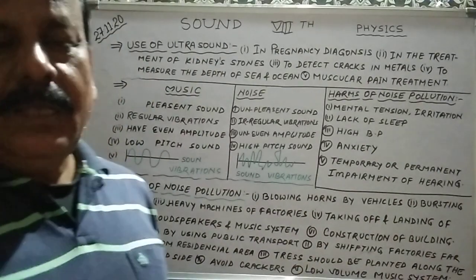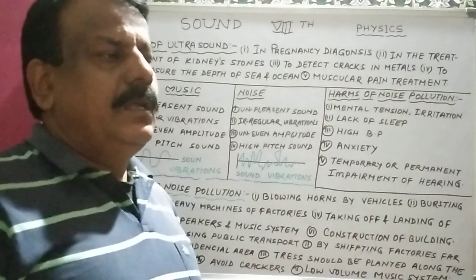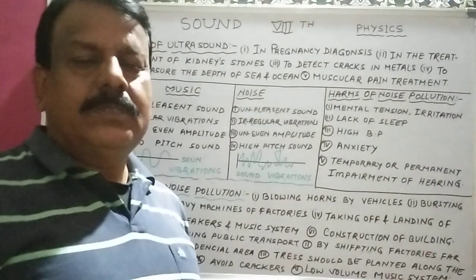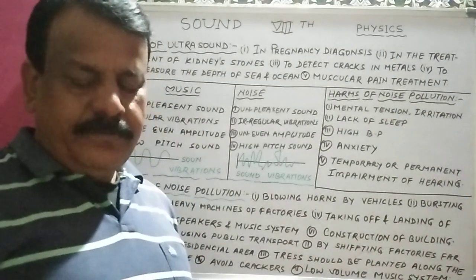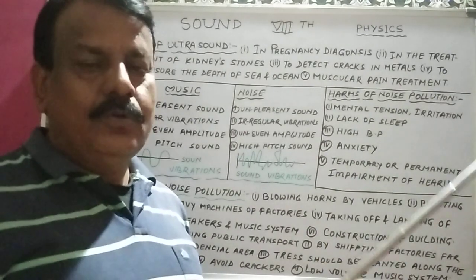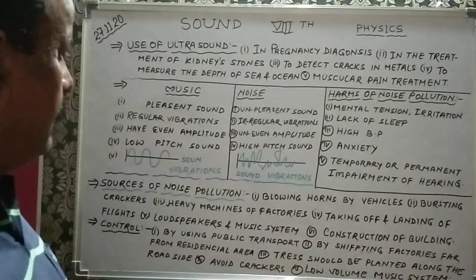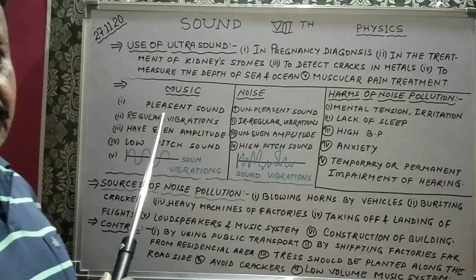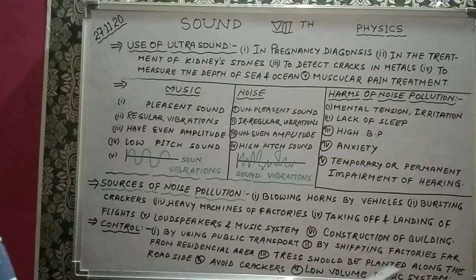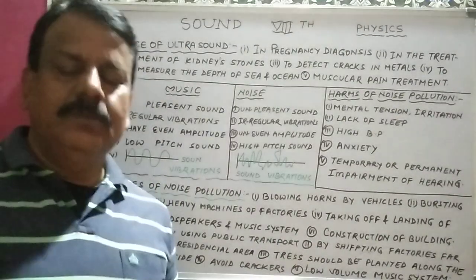So, this much only for today. In this sound chapter, we have finished the topics for today, and we will continue in the next video — most probably with a few numericals related to this chapter and some important questions to discuss and write. Today we covered: use of ultrasound, difference between music and noise, harms of noise pollution, sources of noise pollution, and how to control noise pollution. Thank you very much.